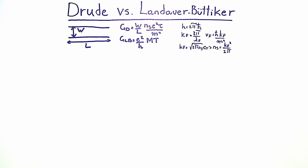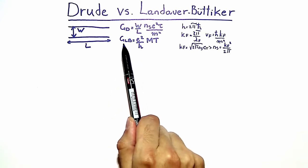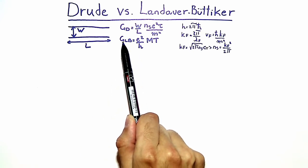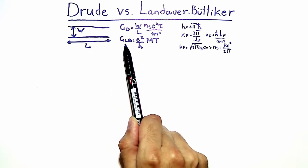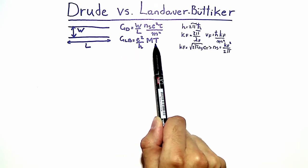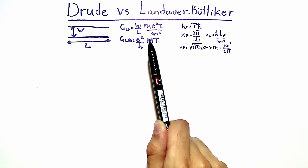Also, for the sake of completeness, the formula for the conductance in the Landauer-Büttiker model is only valid in the limit of zero temperature.